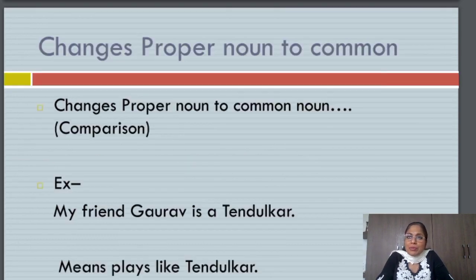Sometimes there are people who have reached an iconic status, and we try to compare their qualities with another person. In that sense, we can refer to that particular person as a common noun. My friend Gaurav is a Tendulkar. If I say this, I am drawing a comparison between my friend Gaurav's cricket playing abilities to Tendulkar's. This is a different usage where I have made use of the indefinite article A in front of a proper noun.